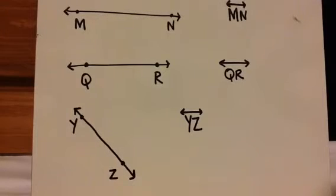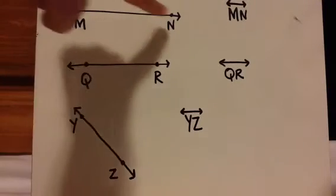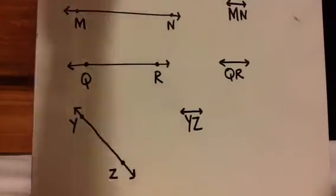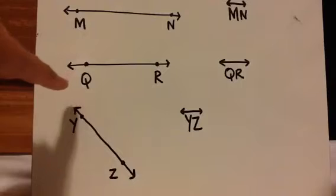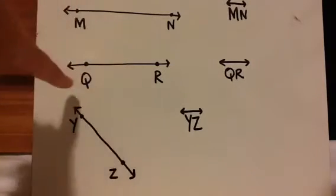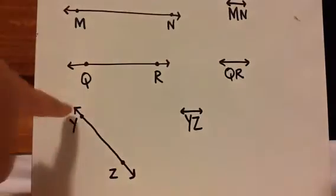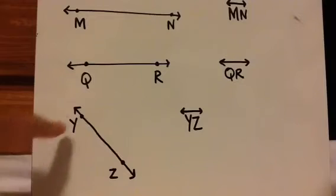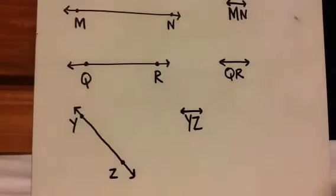Let's look at some examples. This one has arrows on both ends, so we know it's a line. There's an M and an N, so we call it line MN and this is how we write it. This one is another line — it has two arrows, and Q and R are the points, so you call it line QR. This one is going diagonally, but it's still a line because both ends have arrows, so you call it line YZ.